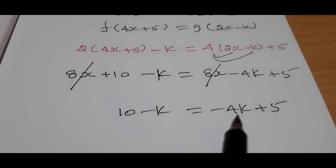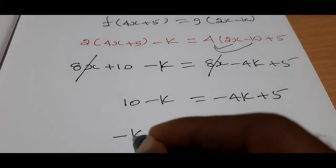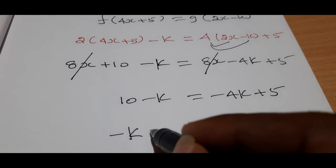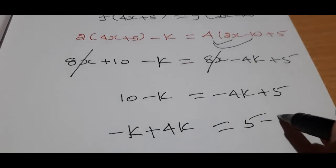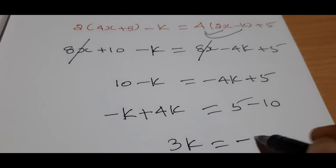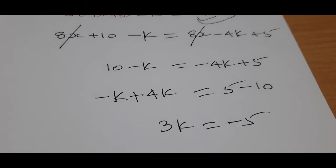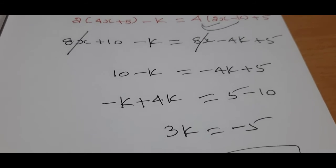Now we move the variables to one side. We have minus 4k plus 4k plus 10 minus 10, which gives minus 3k equals minus 5. Then k equals minus 5 divided by 3, so k equals minus 5 by 3.